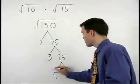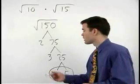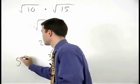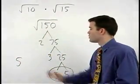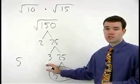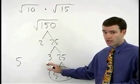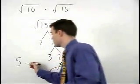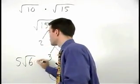Since we have a pair of 5's, a 5 will come out of the radical. The 2 and 3 that are left over will stay inside the radical, multiplying together to make 6. So we have 5 root 6.